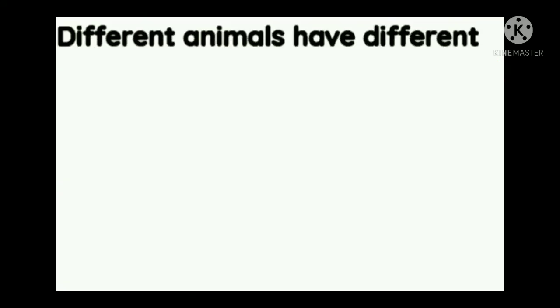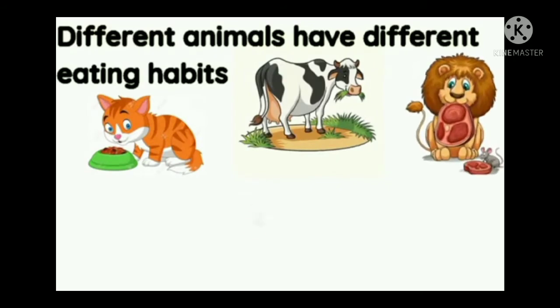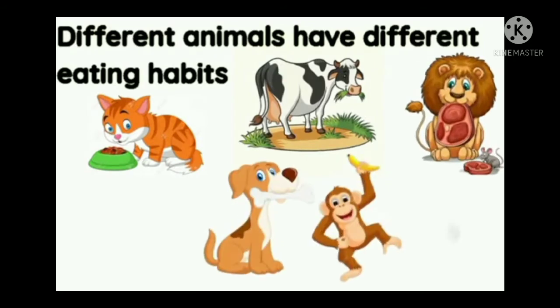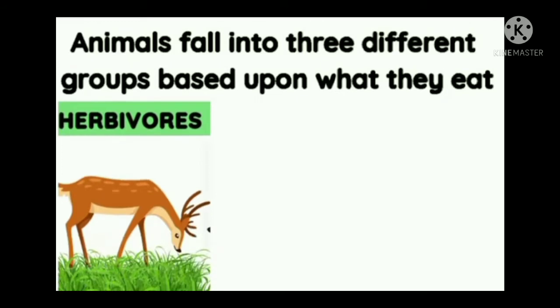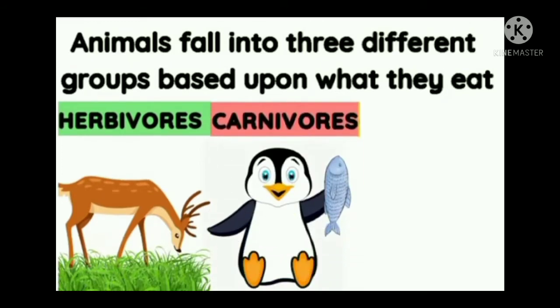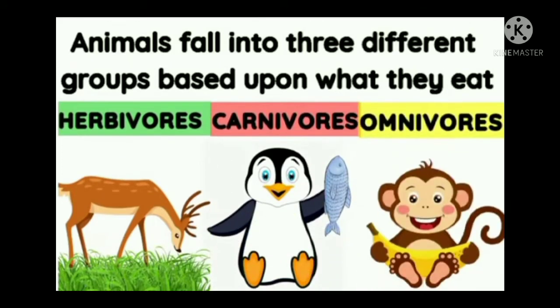Different animals have different eating habits, and on the basis of their eating habits we can categorize these animals in three groups. These are Herbivores, Carnivores and Omnivores. Now let's know one by one about these groups and their eating habits.